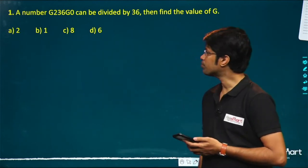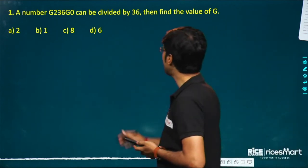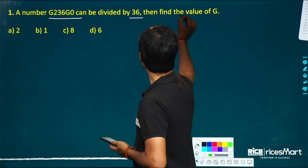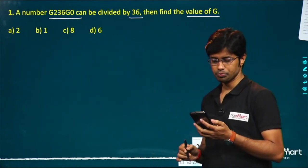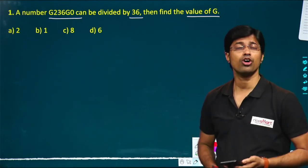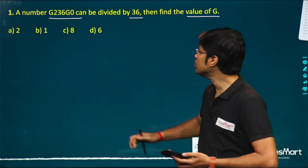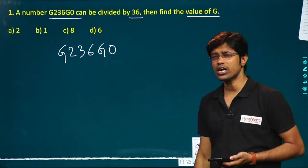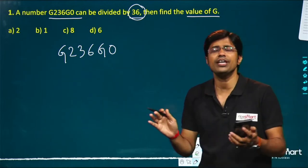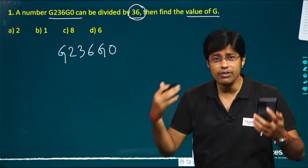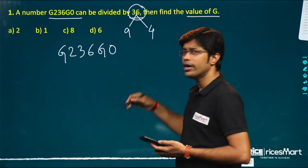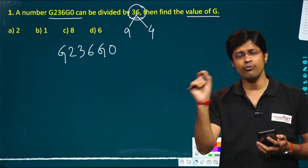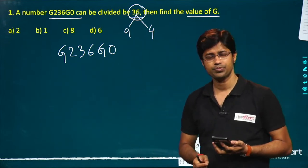Question number 1: A number 623660 can be divided by 36. Then find the value of G. The options are a) 2, b) 1, c) 8, d) 6. This number has G in two positions and the number is divisible by 36. We need to check which value makes it divisible.